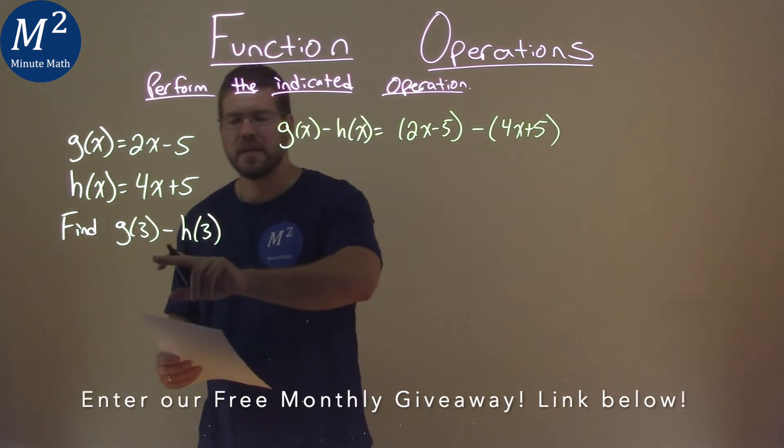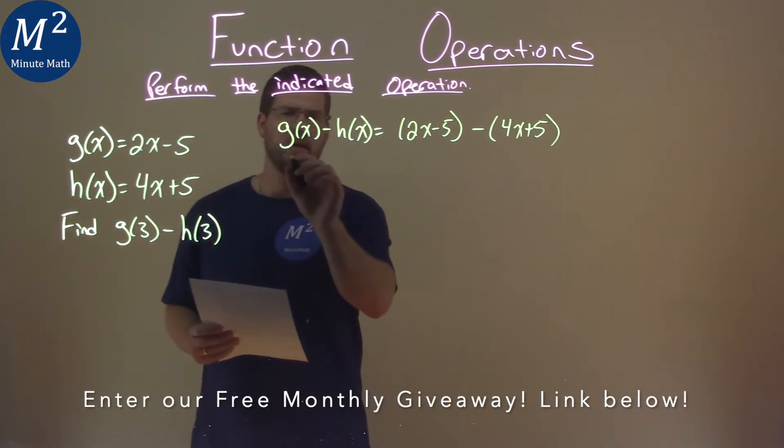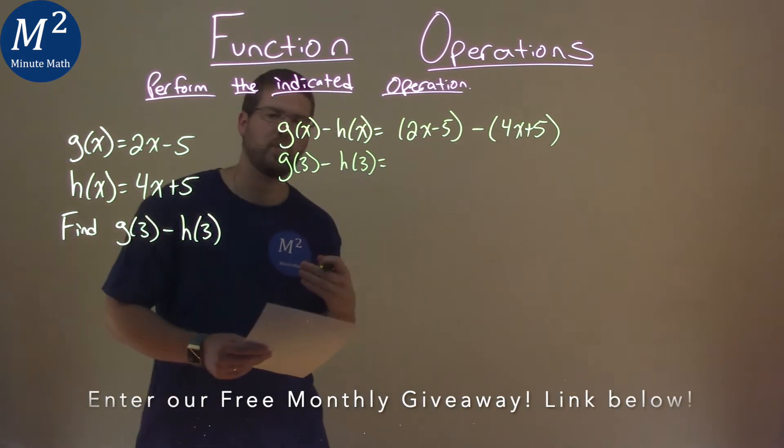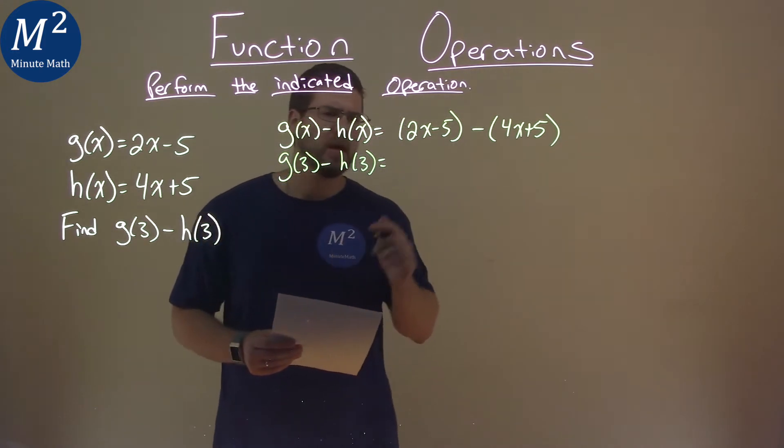Now they ask us, what is g of 3 minus h of 3? So if we have g of 3 minus h of 3, we're just plugging 3 in for x's.